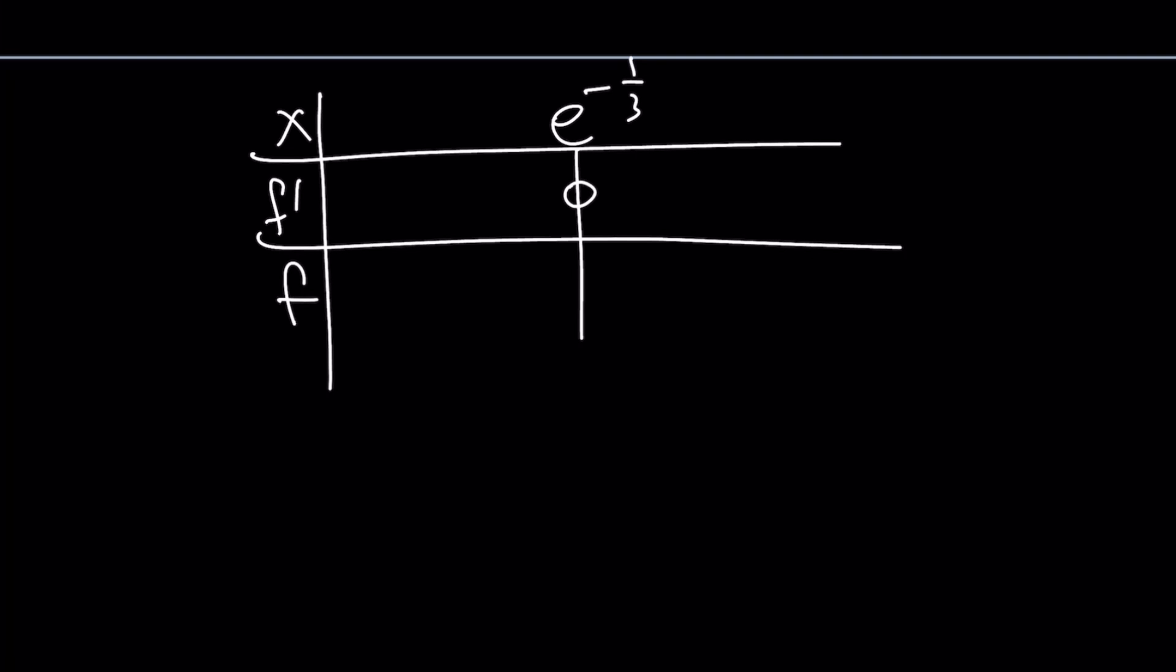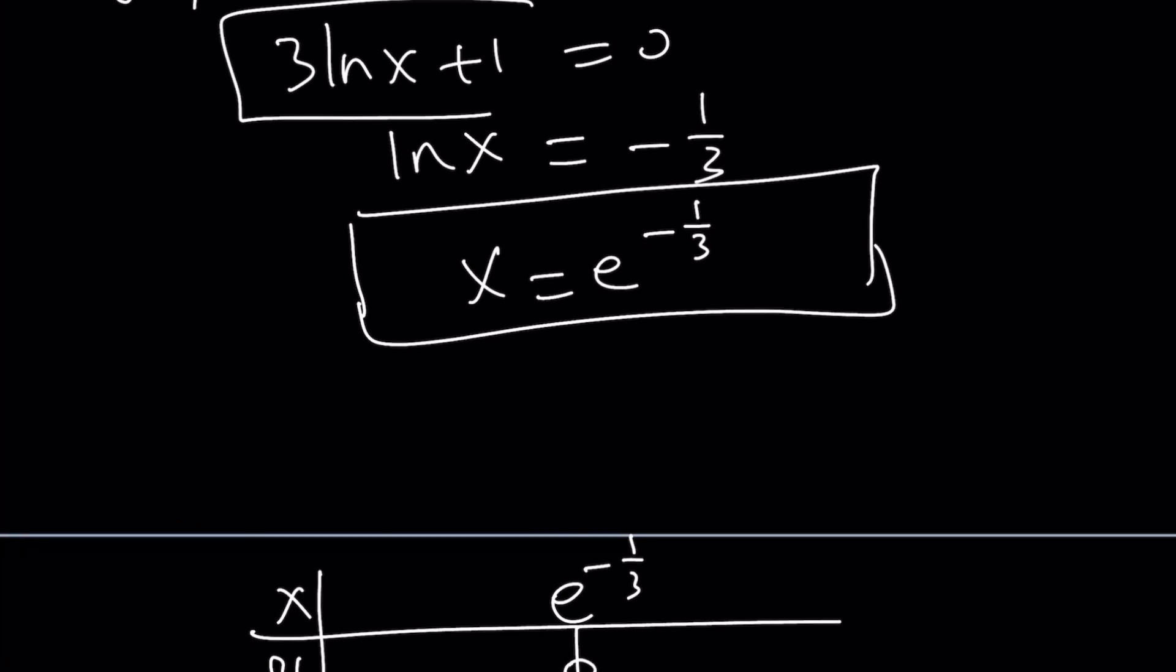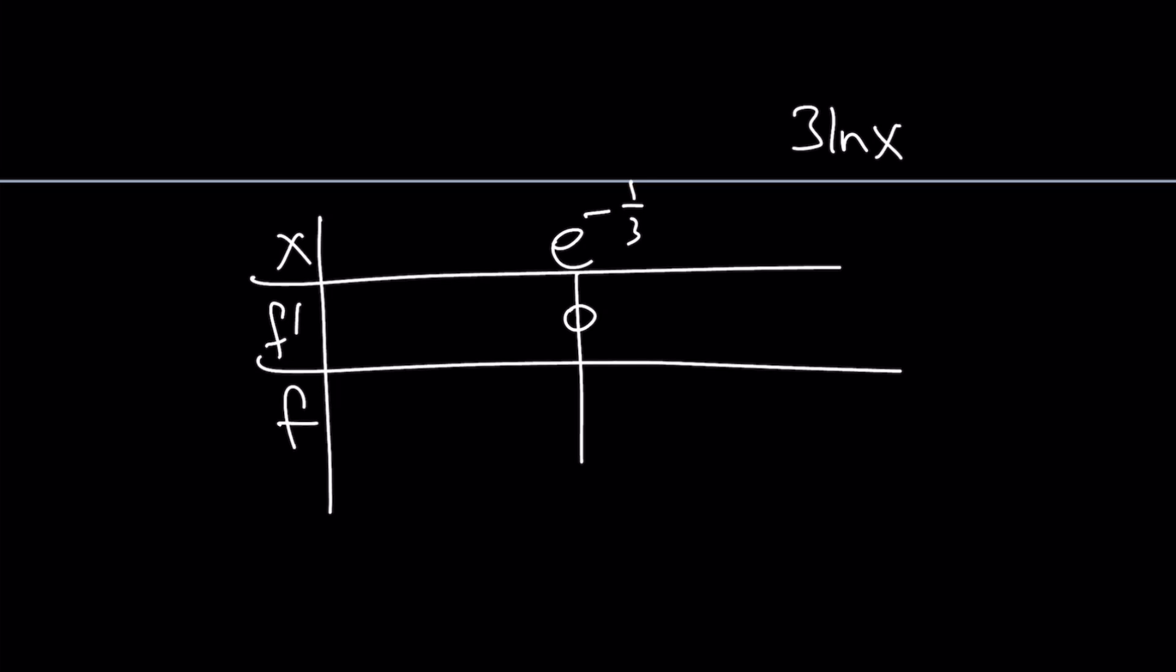Now, does it become positive or negative to the left and to the right? How do we find out? If you look at this 3 ln x plus 1, that's the only thing that changes sign. We can use a test value. Zero, you don't want to use. You want to use something in the domain of ln x. How about 1? If x is 1, we're going to get a positive value. And 1 is greater than e to the power of negative 1 third. So it's going to be positive here. Therefore, it's going to be negative here, which indicates that our function is going to decrease and then increase. So this is going to be a minimum at x equals e to the power of negative 1 third.